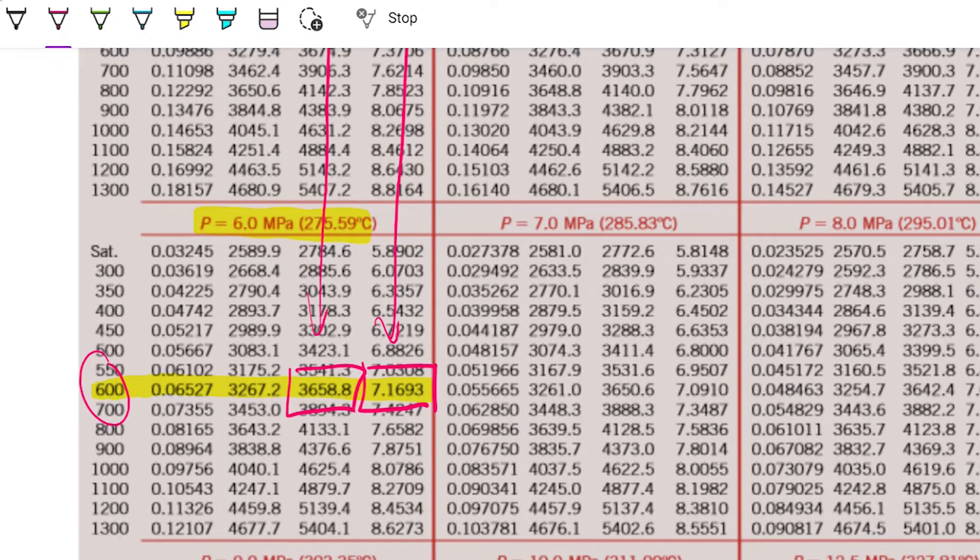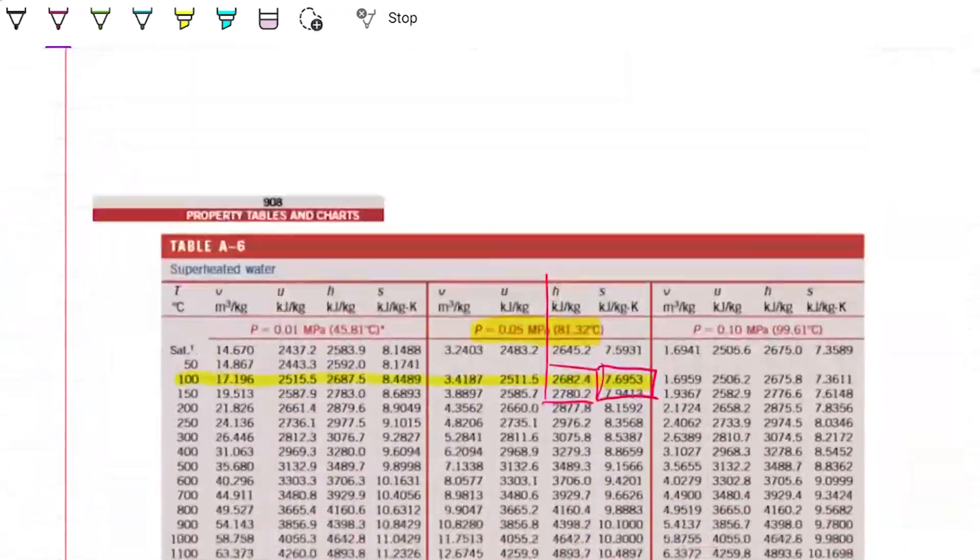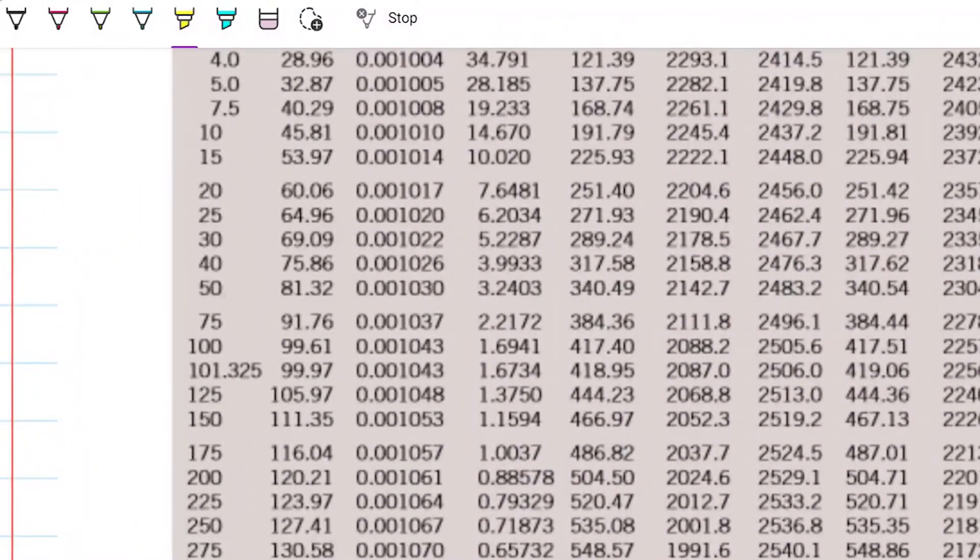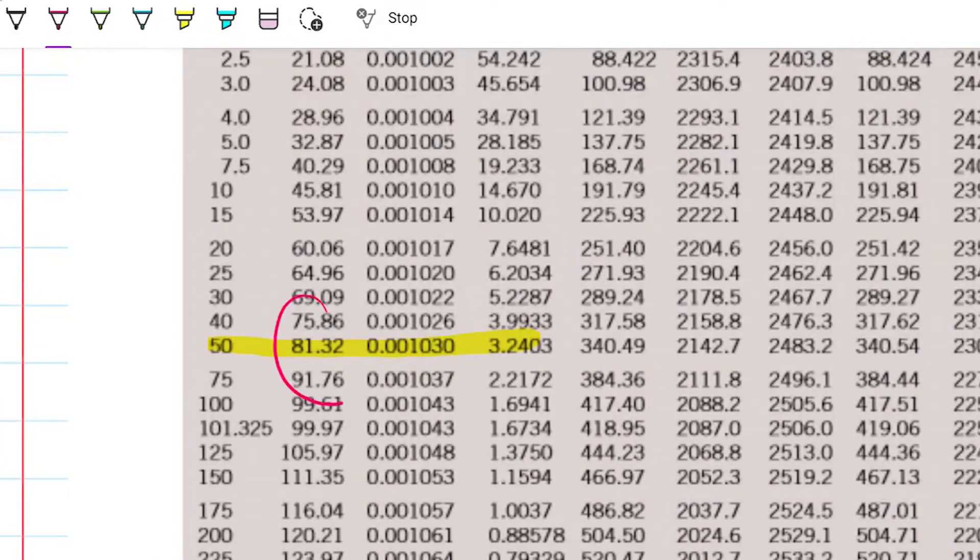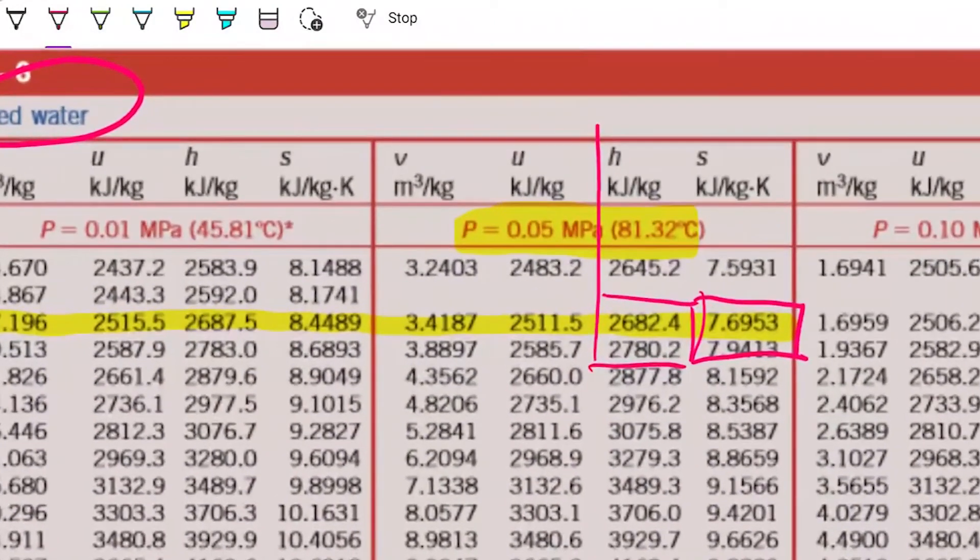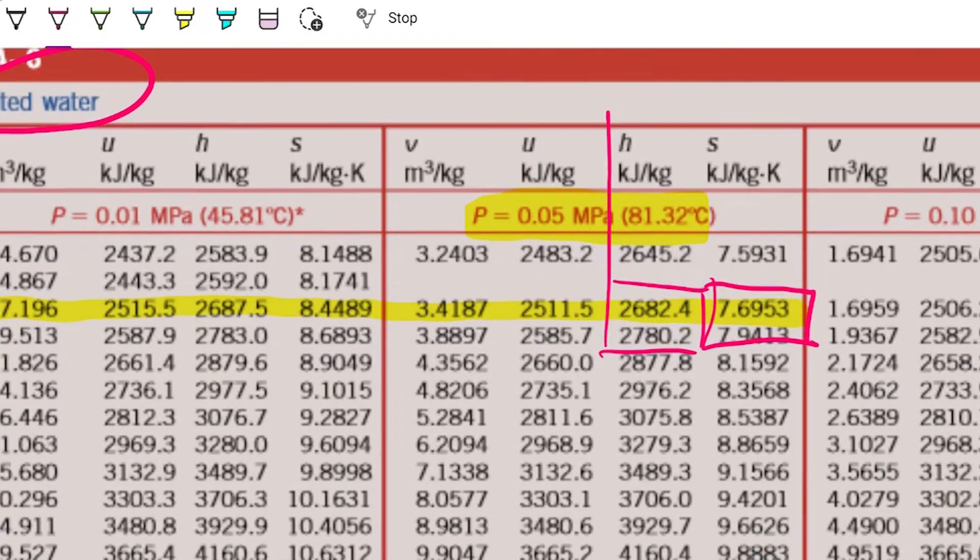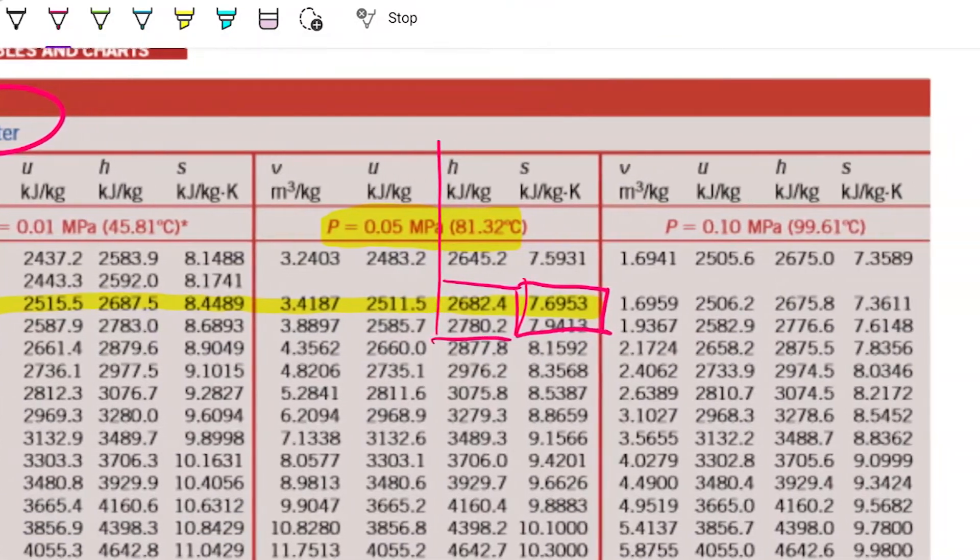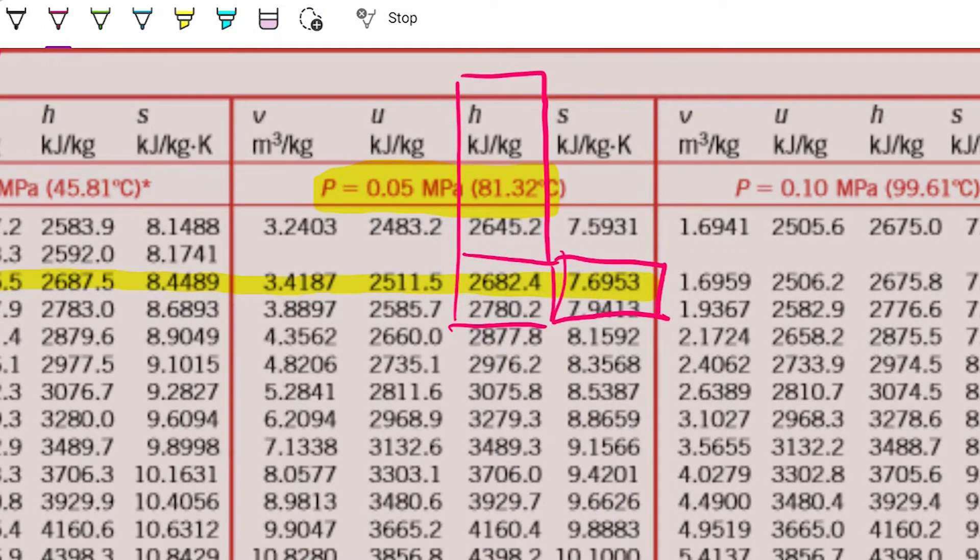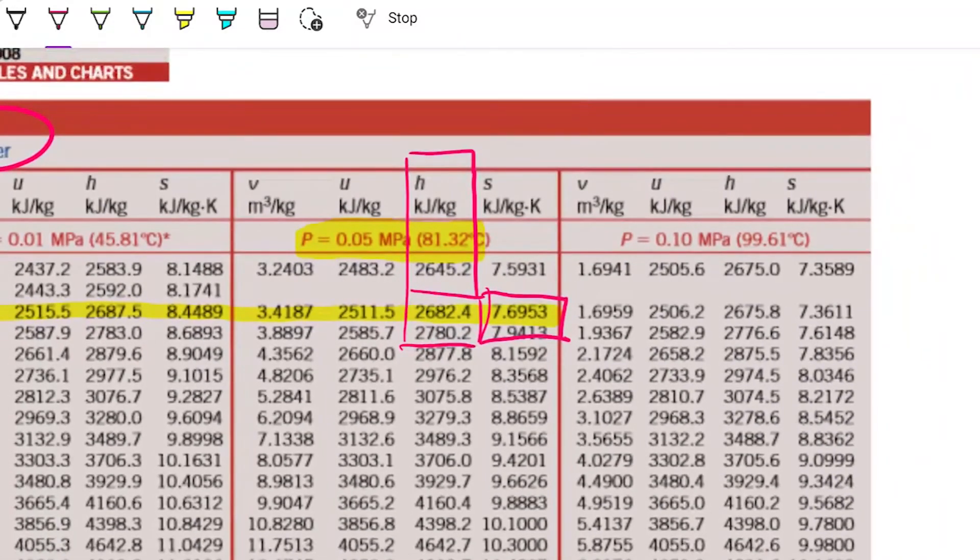The other guy, the state two is a hundred Celsius and 50 kilopascals. So let me go to 50 kilopascals here. And I'm going to note that the saturated temperature is 81. We are at a hundred. So therefore, superheated state. Wrong table. We need to go to the superheated table. Superheated table. 50 kilopascals, the same thing as 0.05 megapascals. And we're interested in the hundred. So this is where we're interested in these two guys here. This is the value for entropy. And this is the value for enthalpy. Nice.